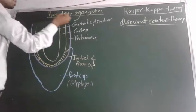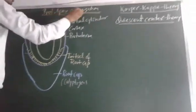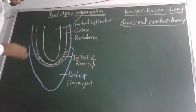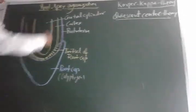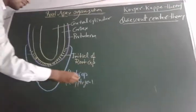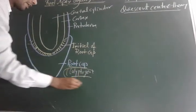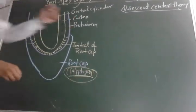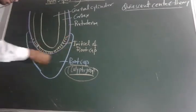The next topic is root apex organization — the organization related to the formation of the root apex. In a simple root section, there is a root cap, also known as calyptrogen, at the tip.